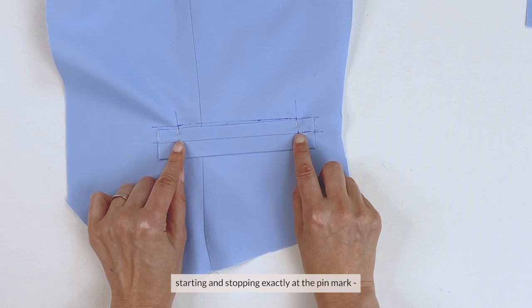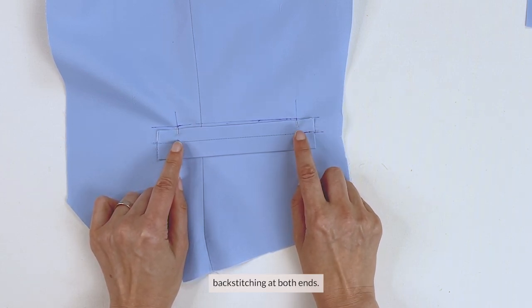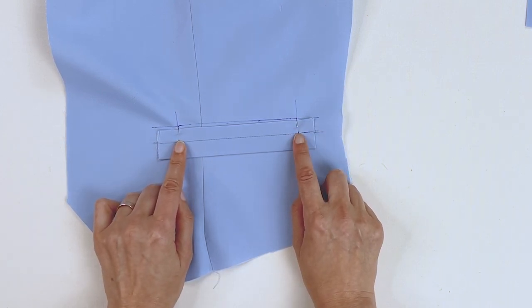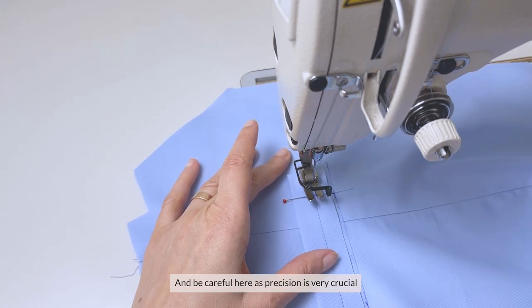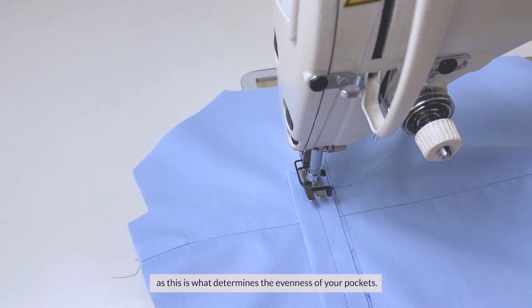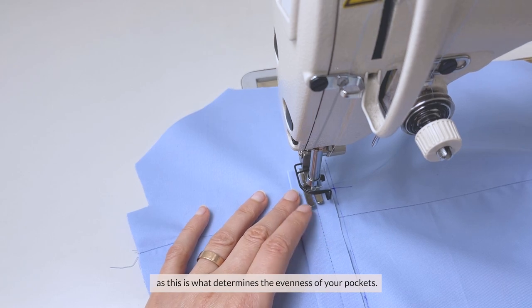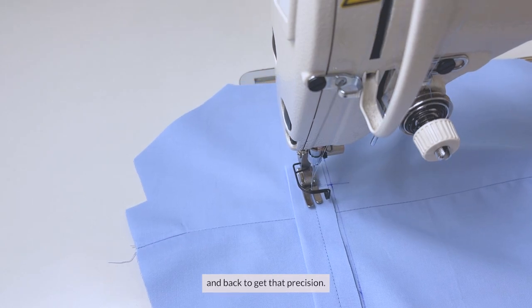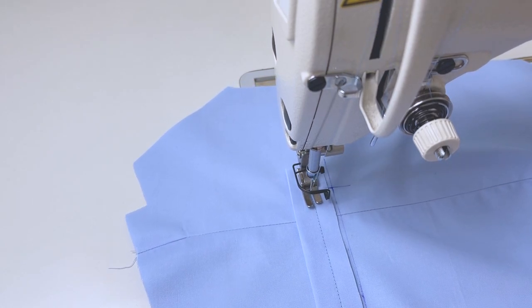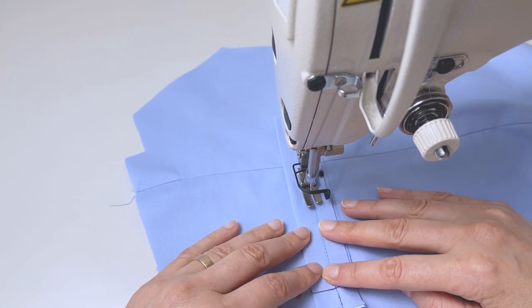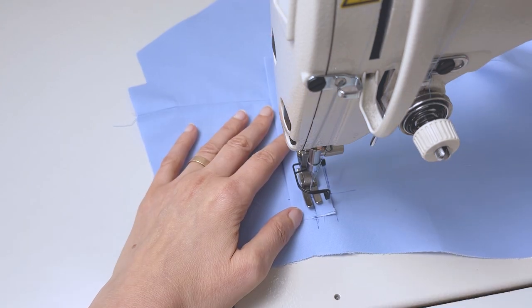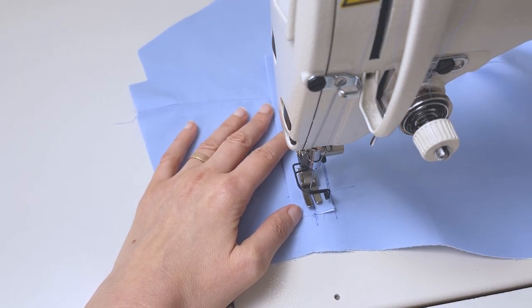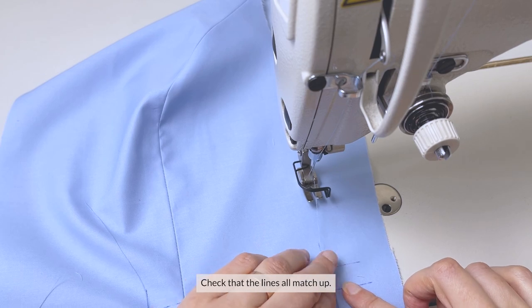Now we're going to sew the welt straight from one pin to the other, starting and stopping exactly at the pin mark, backstitching at both ends. And be careful here as precision is very crucial, as this is what's going to determine the evenness of your pockets. Count the backstitches, 1, 2 and 3, and then back to get that precision. Check that the lines all match up.